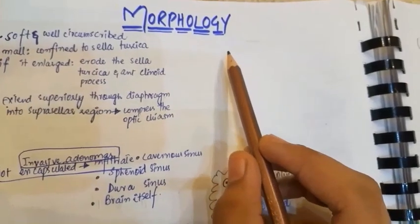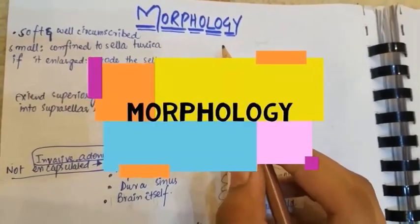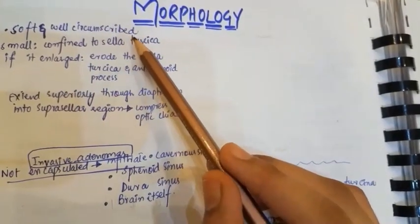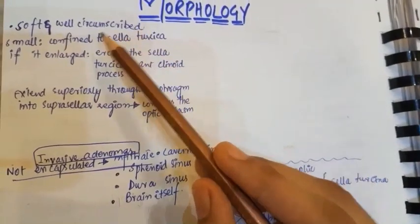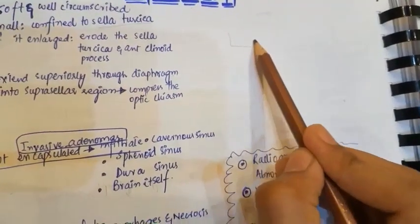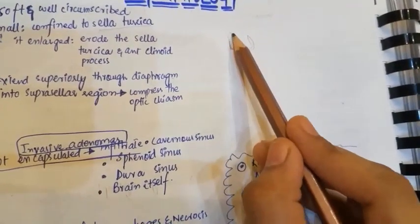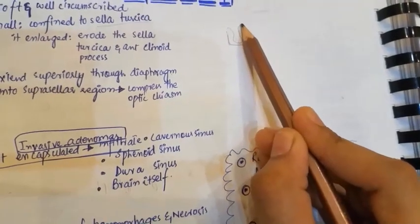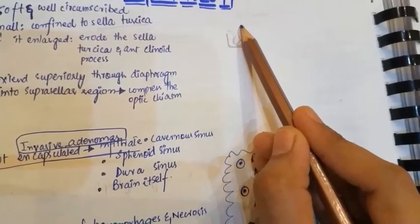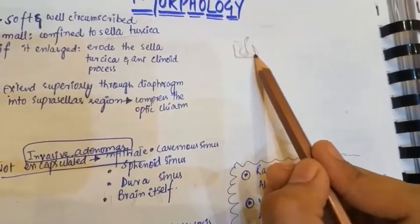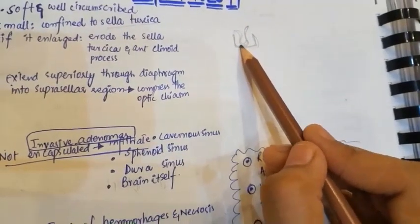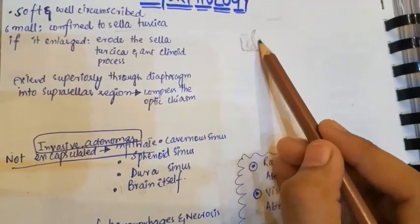Grossly in pituitary adenomas, we will see that adenomas will be soft and well-circumscribed. If it is small, it is confined to the sella turcica, which is the bony structure in which the pituitary gland lies. If the adenoma enlarges, it erodes the sella turcica.